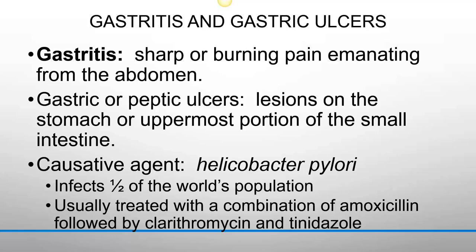Gastritis and gastric ulcers: gastritis is a sharp or burning pain emanating from the abdomen. Patients often present with epigastric pain — the region right below the heart — and this pain may irradiate through to the back and may cause vomiting. Gastric or peptic ulcers are lesions on the stomach or uppermost portion of the small intestine. The most common causative agent is Helicobacter pylori, which infects half of the world's population. In most people it is asymptomatic, and they don't realize they have it.